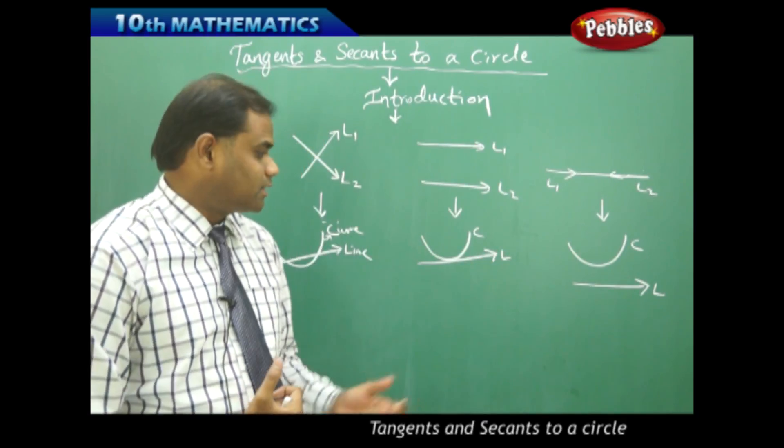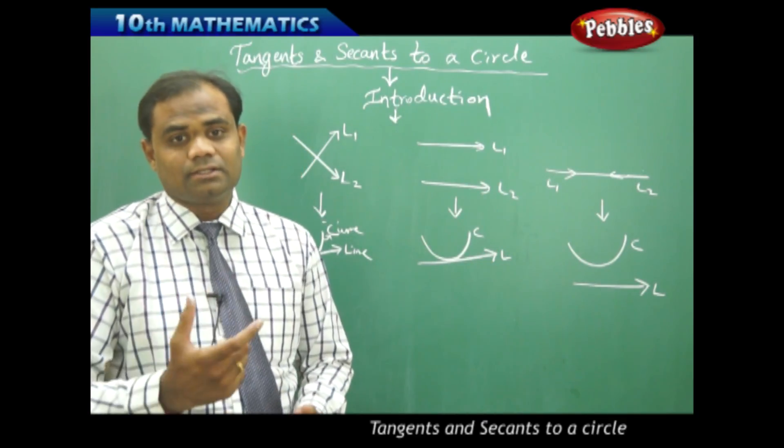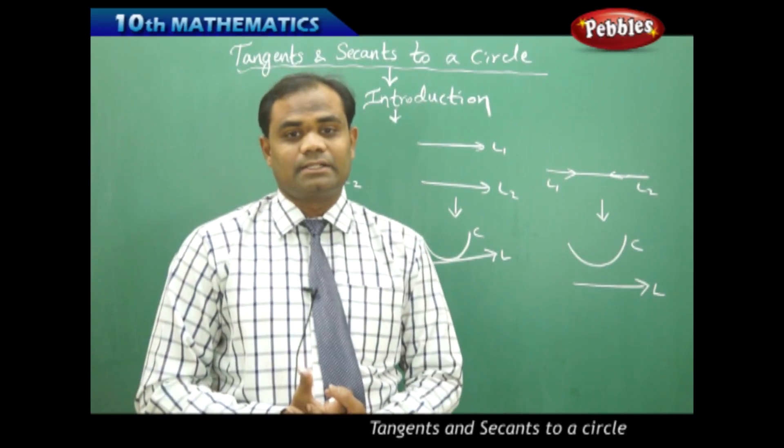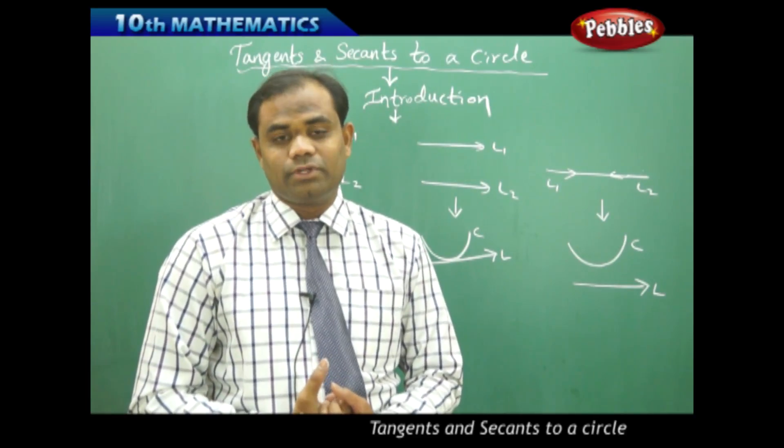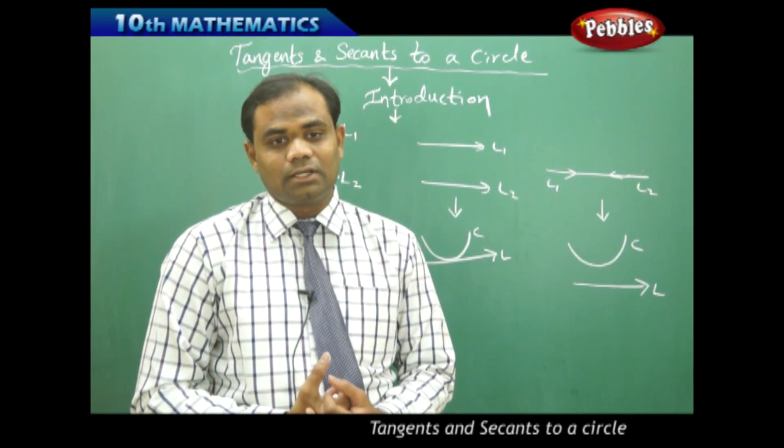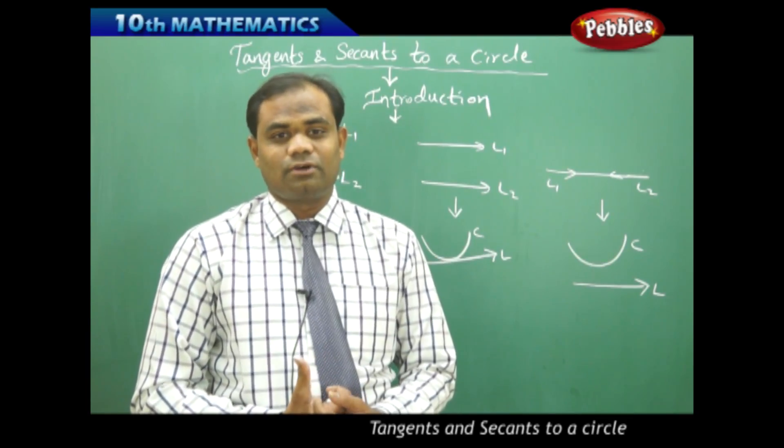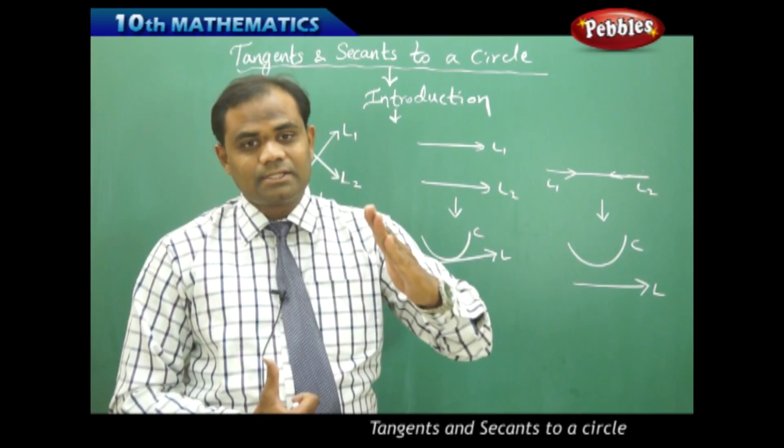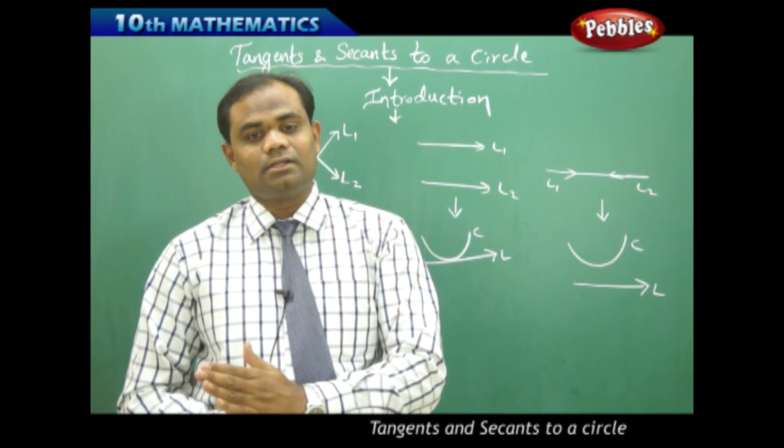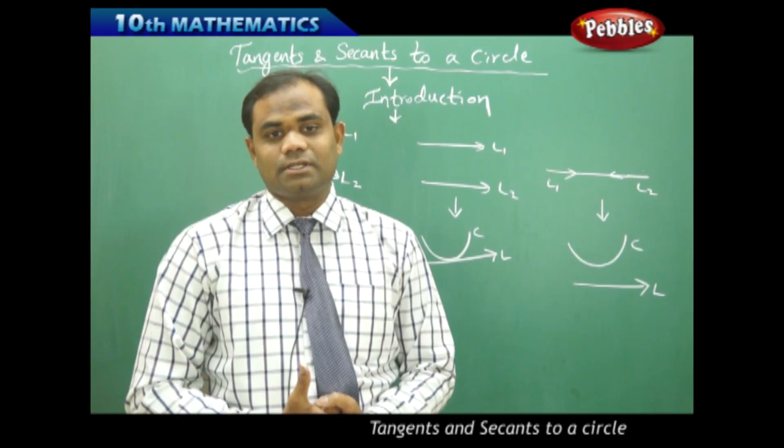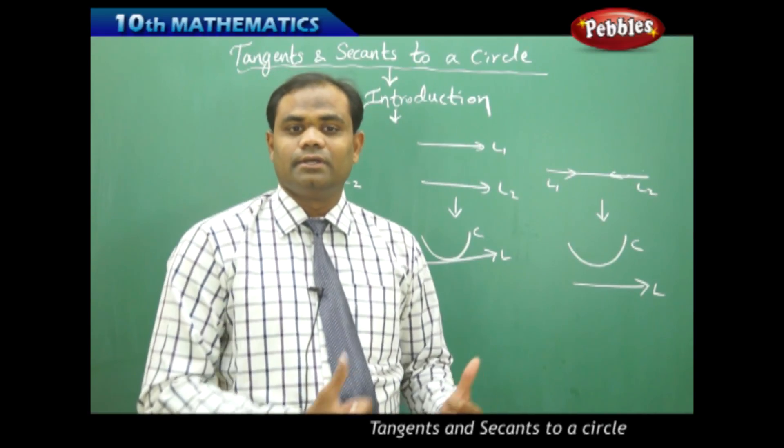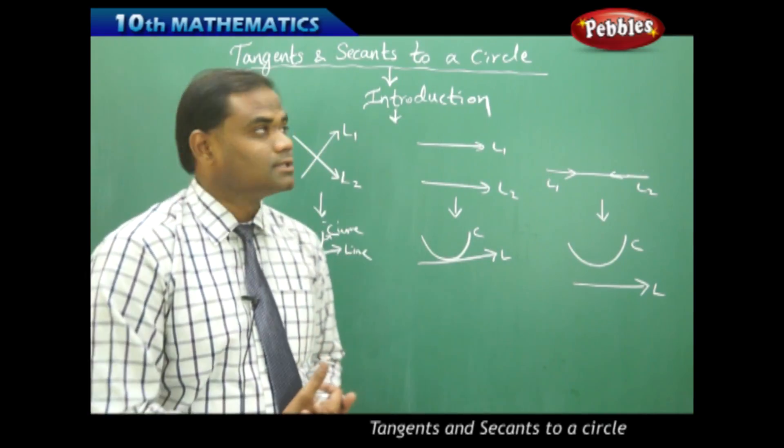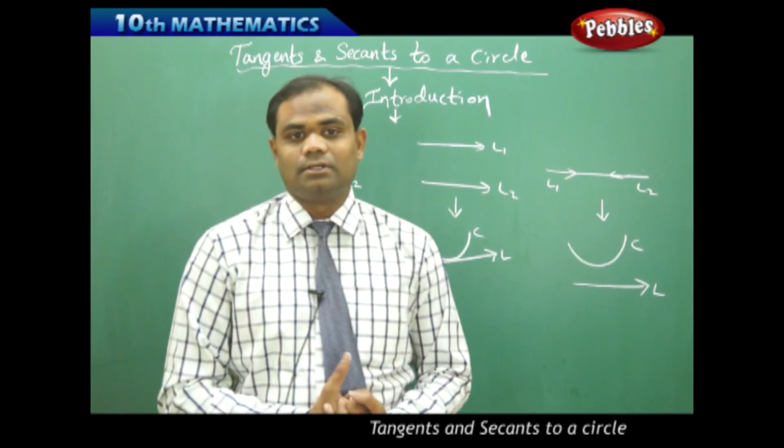So these three different cases have risen to the topic of tangents and secants to a circle. Today we are going to study about the circle and the different possibilities of a line which cuts the circle, does not cut the circle, or touches the circle. These are the three cases which we are going to study in the session of tangents and secants to a circle.